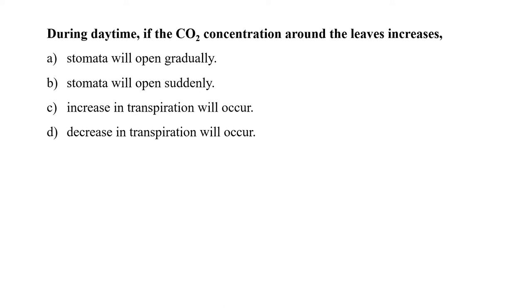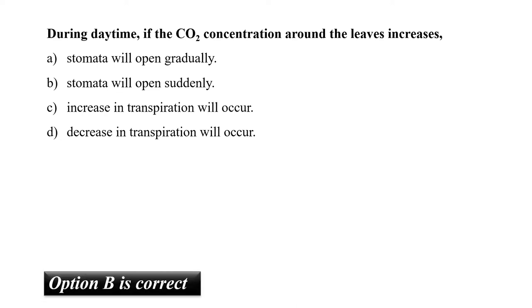The next question is: during daytime, if the CO2 concentration around the leaves increases, then how does it directly affect the movement of stomata? During the C3 cycle, carbon dioxide is necessary, so with an increase in CO2 concentration, the stomata will suddenly open in order to allow carbon dioxide to enter inside. So our correct option is B, that is stomata will open suddenly.